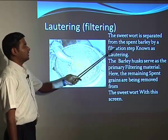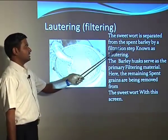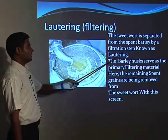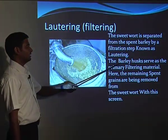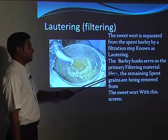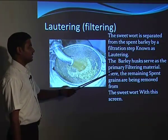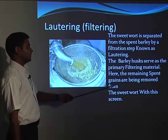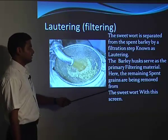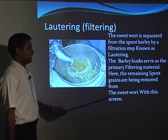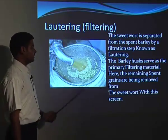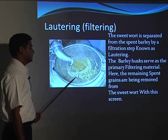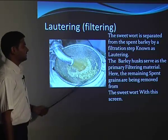The sweetwort is separated from the spent barley by a filtration process known as lautering. The barley serves as the primary filtering material. The remaining spent grains are removed from the sweetwort with a screen, filtering out the waste material.